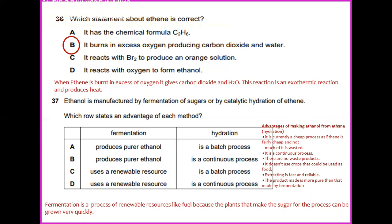There are no waste products and it doesn't use crops that could be used as food. It's fast and reliable and the product made is more pure than that made by fermentation. So we can see in the process of hydration one of it is a continuous process. Fermentation is a process of renewable resources because the plants that make the sugar for the process can be grown very quickly. So you can see that the most suitable answer for this question would be fermentation uses renewable resources and hydration advantage is a continuous process. So number 37 would be D.